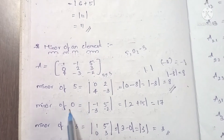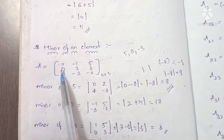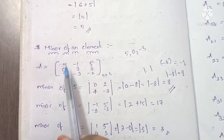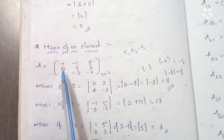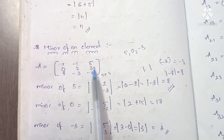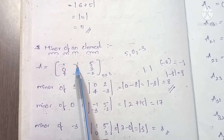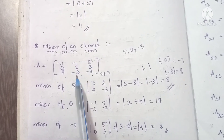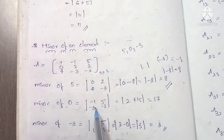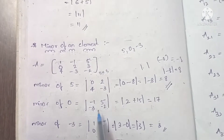Next, find the minor of the element 0. The element 0 appears in the matrix. Since 0 is in a particular row, we eliminate that row and column. The remaining elements after eliminating the row containing 0 are: -1, 5, -3, -2. The determinant of this submatrix will be computed as ad minus bc.